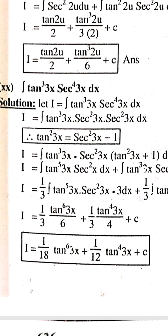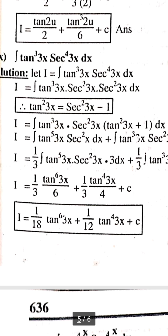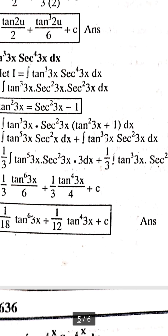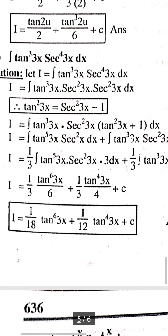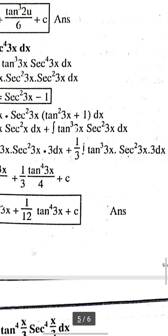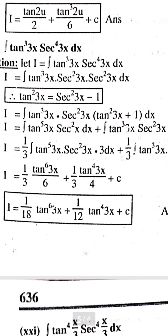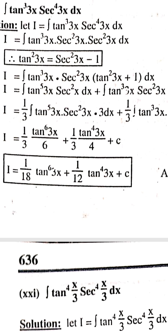Number 20: integration of tan³(3x) · sec⁴(3x) dx. We break sec⁴(3x) as sec²(3x) · sec²(3x), and substitute sec²(3x) = 1 + tan²(3x). Then let u = tan(3x). After multiplying out and integrating: (1/18)tan⁶(3x) + (1/12)tan⁴(3x) + C.